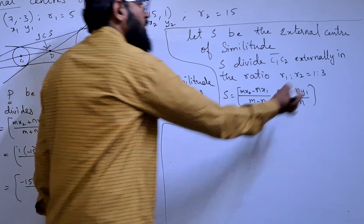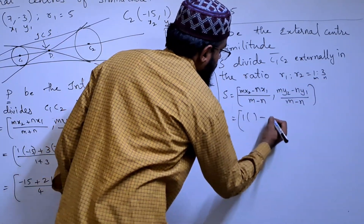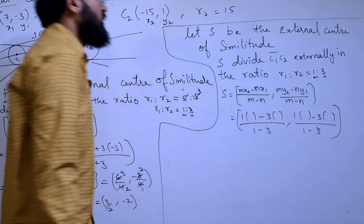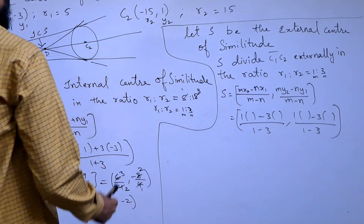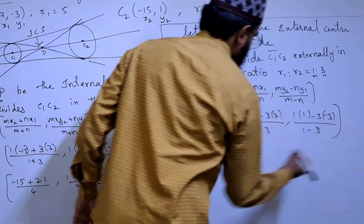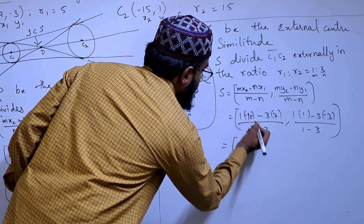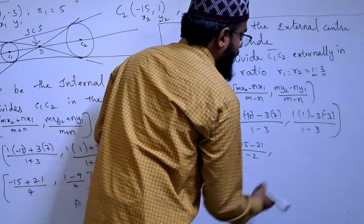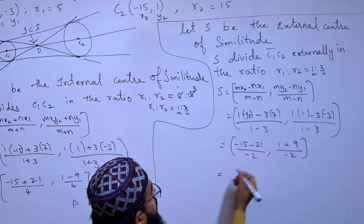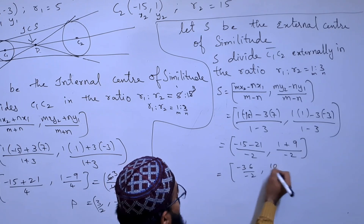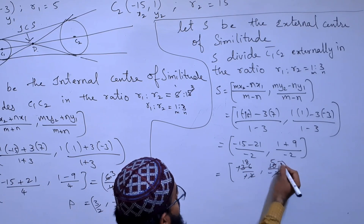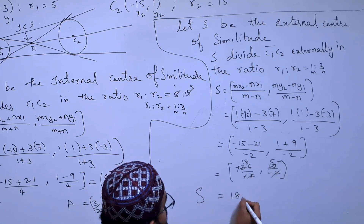Substituting m = 1, n = 3, x1 = 7, y1 = −3, x2 = −15, y2 = 1: S = ((1×(−15) − 3×7)/(1−3), (1×1 − 3×(−3))/(1−3)) = ((−15 − 21)/(−2), (1 + 9)/(−2)) = (−36/−2, 10/−2) = (18, −5). So the external center of similitude is (18, −5).